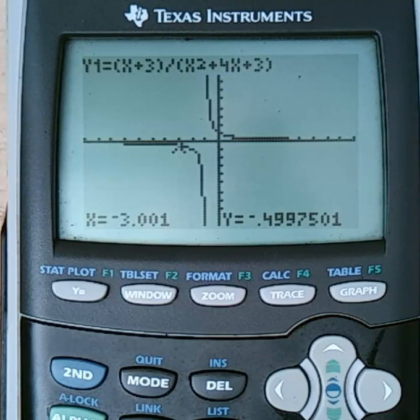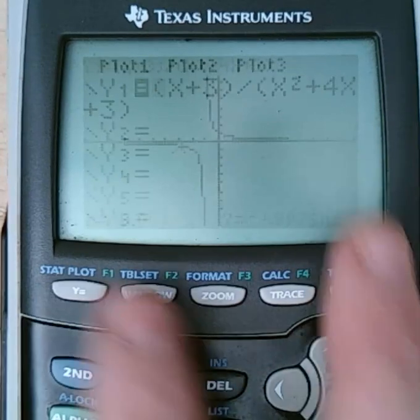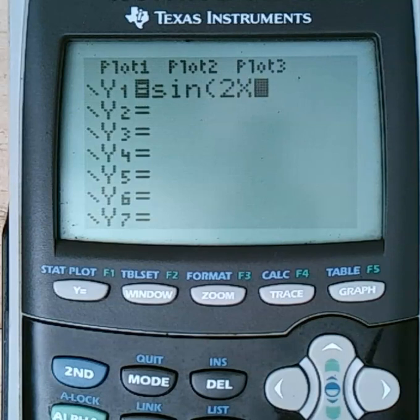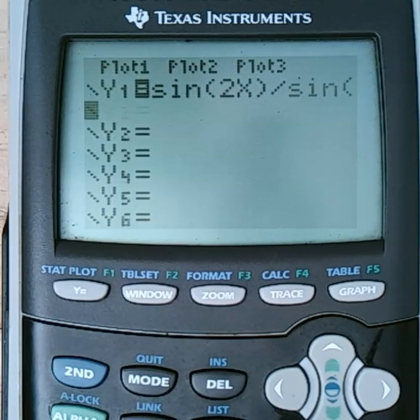So that's how you use your graphing calculator to do limits by tables. Real simple, folks. You're going to just take whatever the function is. So let's try a different one. If I try, let's try something like sine of 2x over sine of x. Same kind of situation here.